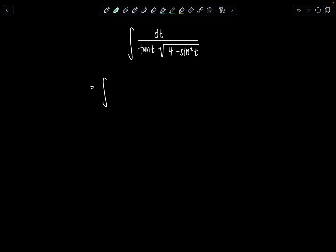I know tangent t is sine t over cosine t, but since it's in the denominator, then that cosine t is going to get flipped up to the numerator. So I can rewrite this now as cosine t dt over sine t times the square root of 4 minus sine squared t. And then hopefully now you can kind of see what a good choice would be for u.